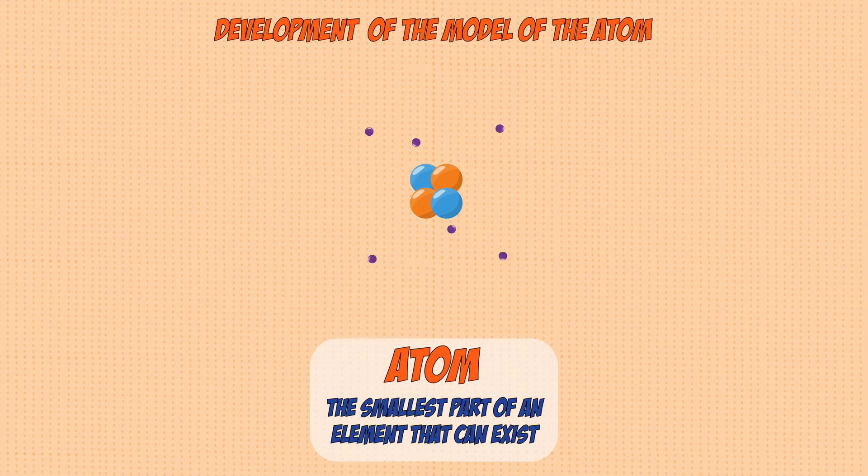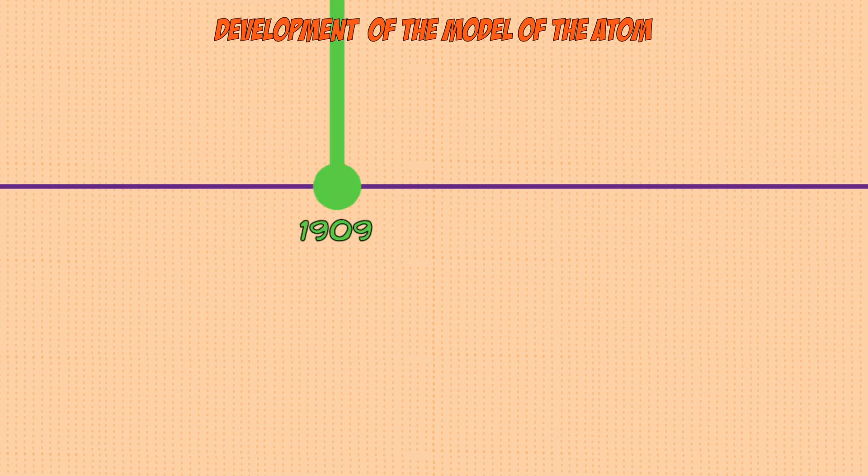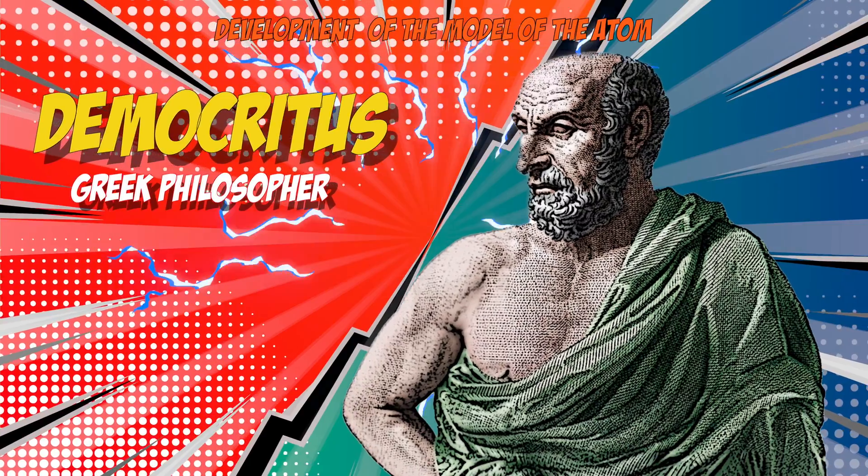Atoms make up every single thing in the universe, but our understanding of what an atom is has evolved significantly over time and it all started a thousand years ago with an ancient Greek philosopher called Democritus.